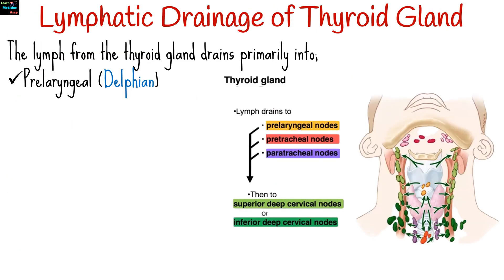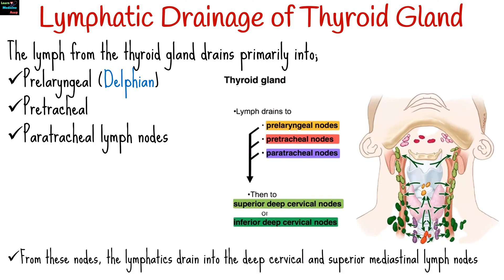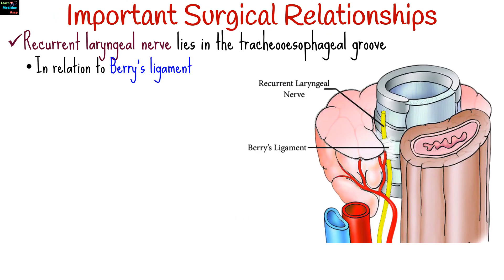The lymph from the thyroid gland drains primarily into the pre-laryngeal, also known as the delphian node, pretracheal, and paratracheal lymph nodes. From these nodes, the lymphatics drain into the deep cervical and superior mediastinal lymph nodes.